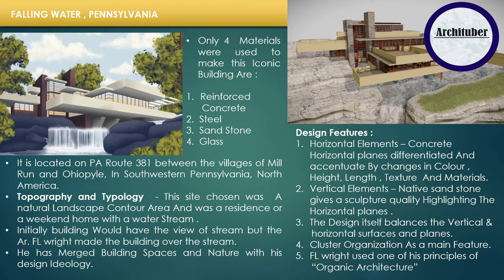In terms of design features, Wright used horizontal elements — horizontal concrete planes with different textures and colors — alongside vertical elements that highlight the horizontal planes. The design itself balances the vertical and horizontal surfaces. You can see the cluster organization in planning, and Wright used one of his core principles, organic architecture, throughout.